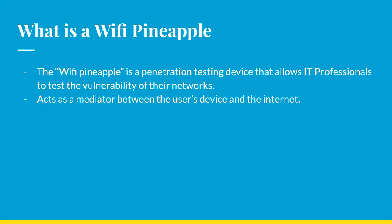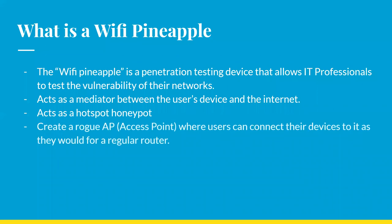It acts as a mediator between the user's device and the internet. When the user connects to the Wi-Fi Pineapple, it provides internet but the Pineapple is able to see all the internet usage between the user's device and the internet. We call this a hotspot honeypot. Basically, the job of a Wi-Fi Pineapple is to create a rogue AP or access point where users can connect their devices, similar to connecting to their own Wi-Fi or just another Wi-Fi point.